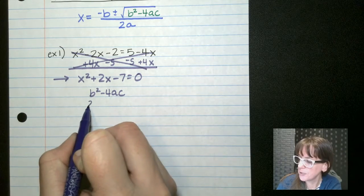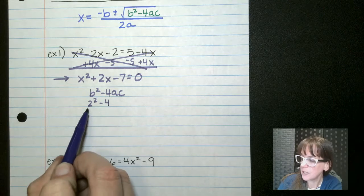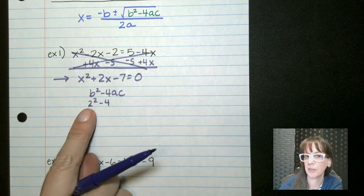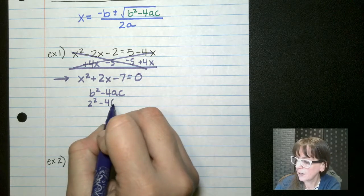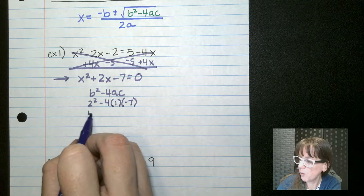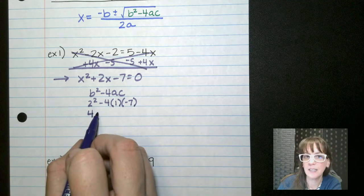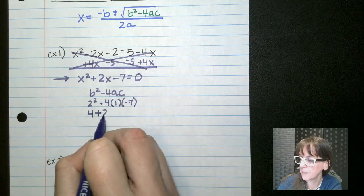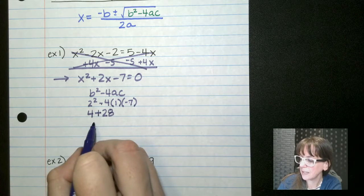Our b is 2, so we're going to do 2 squared minus 4. Make sure if your b is negative, you use parentheses around here, because you should never end up with a negative in the front. Our a is 1, and our c is negative 7. So here we have 4, and don't just bring down your minus sign, because a negative times a negative is a positive, so it's going to be a plus there. So plus 28, that gives us 32.